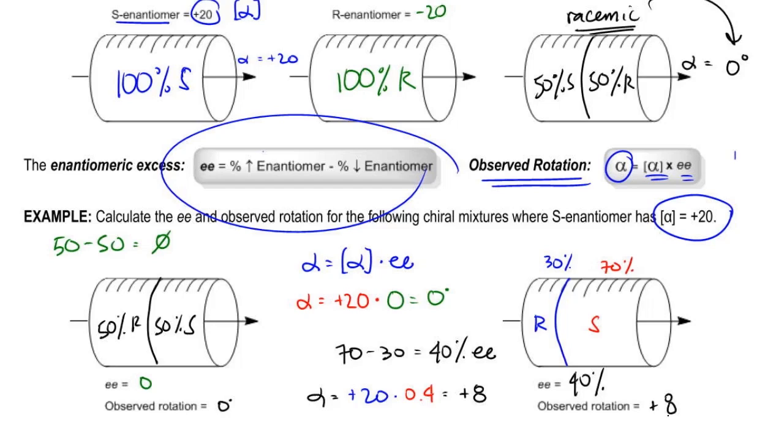Now, how does that intuitively make sense? Well, actually it makes a lot of sense. If you think about it, remember what I said about racemic. Racemic isn't optically active.